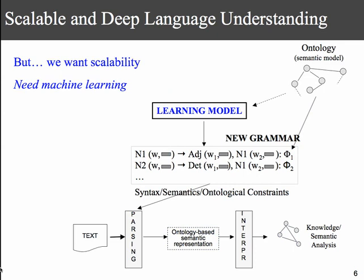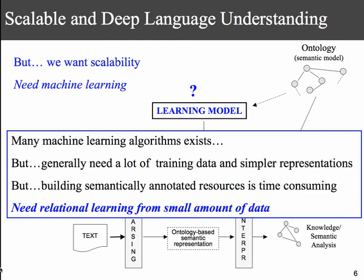Besides that, we also want scalability, and for that we want a machine learning model that automatically learns these grammars. Many learning algorithms require a lot of training data. When we think about learning grammars that capture syntax and semantics, you need to annotate with a lot of semantic information, which is time-consuming. So the requirement for this learning model is to work with a small amount of data, and because representations are complex, we also want relational learning.